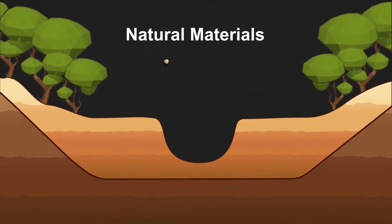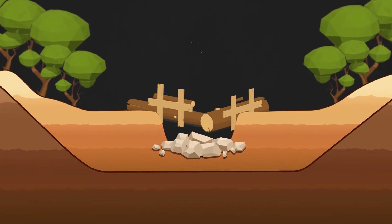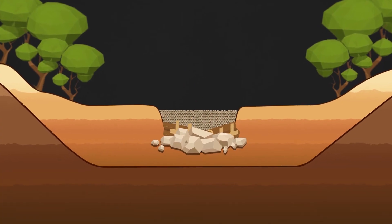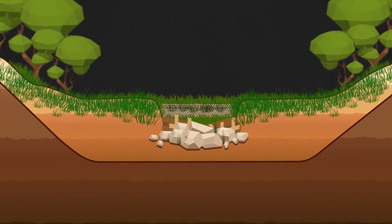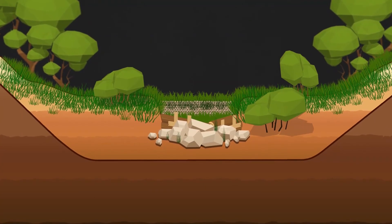These leaky weirs are built from natural materials such as rocks, logs, soil and importantly vegetation, which among other things binds the structures together.